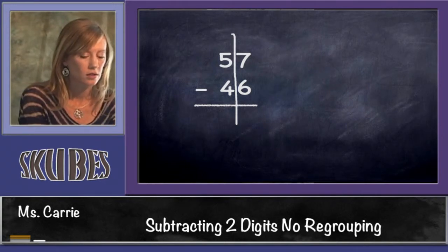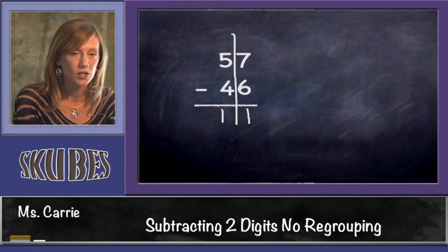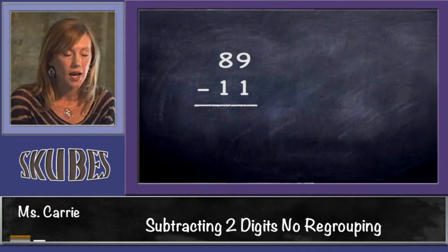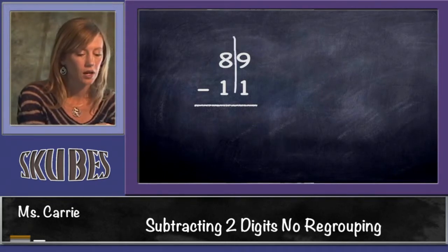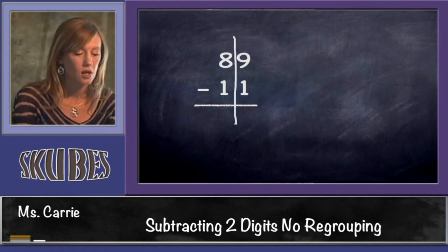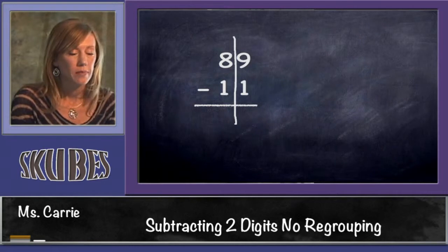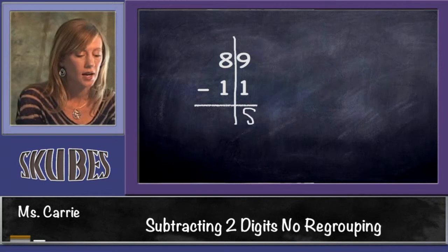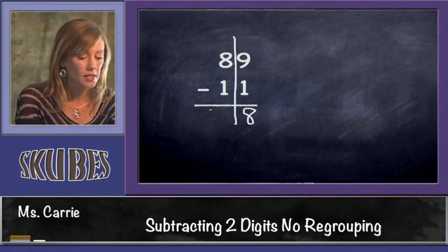Let's try 89 minus 11. Draw a line down the middle to separate our tens and our ones. We always start on the ones side. 9 minus 1 is 8, because 1 less than 9 is 8. And 8 minus 1 is 7, because 1 less than 8 is 7. Our answer is 78.